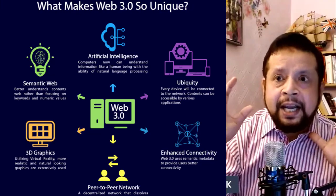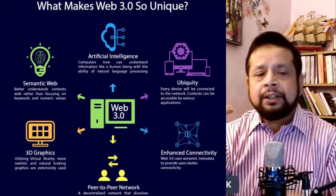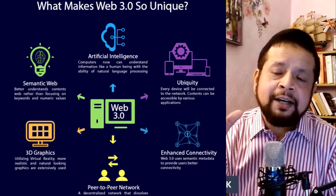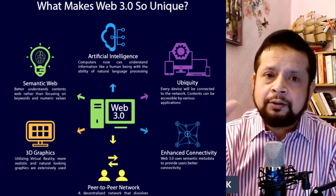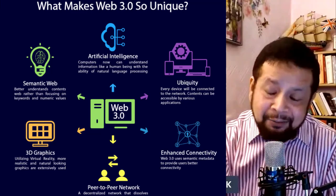We use the permissionless blockchain and the semantic web, where everything is connected to the internet — all devices and IoT are connected. Web 3.0 uses a semantic web that understands content rather than following keywords, moving beyond excessive SEO demands. Artificial intelligence computers can understand information like human beings.